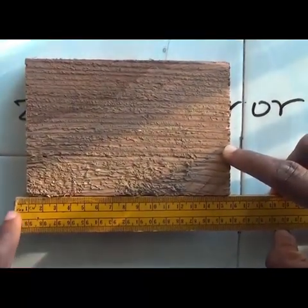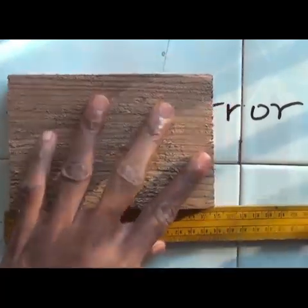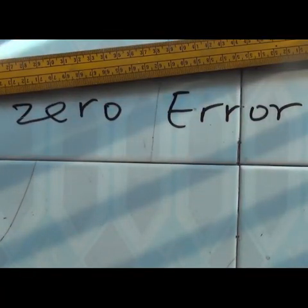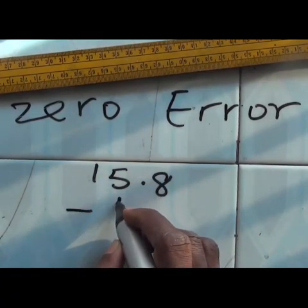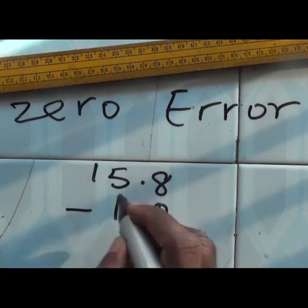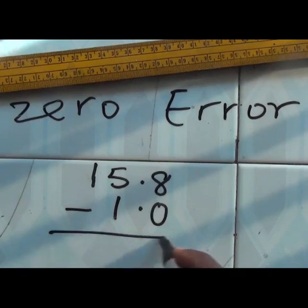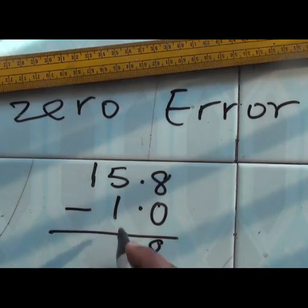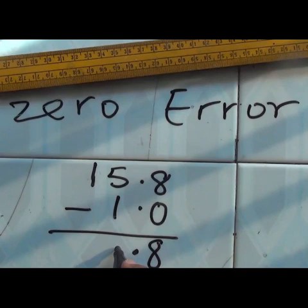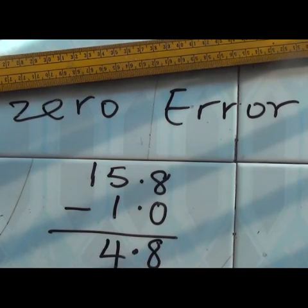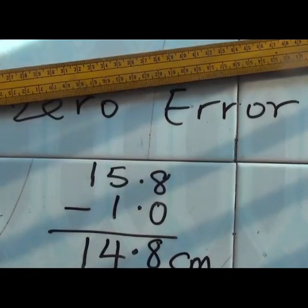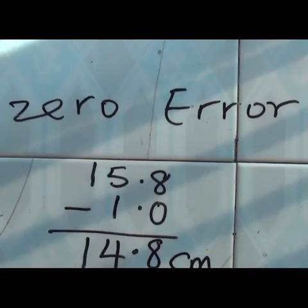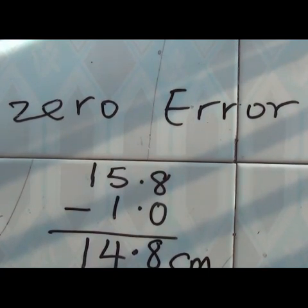Now that is the reading I have at the end. Mind you, I did not start from 0. I started from 1. So to get my accurate reading, I will say 15.8 minus 1 cm. You know, I started from 1 cm. I did not start from 0. So I will have 8 points, I have 4, I have 1. Hence, the real length of this box is 15.8 cm. That is how to eliminate zero error in my measurement.